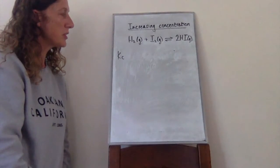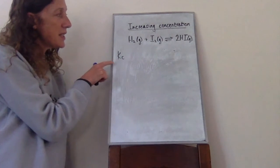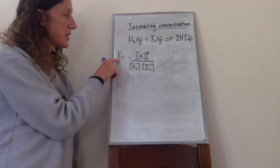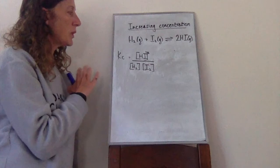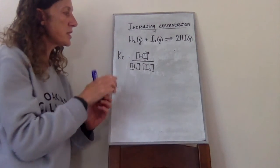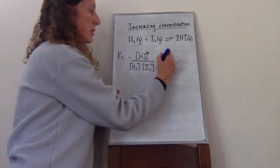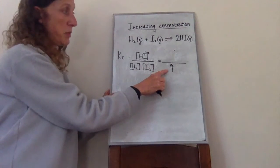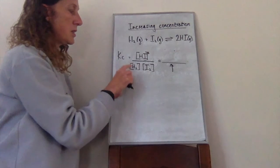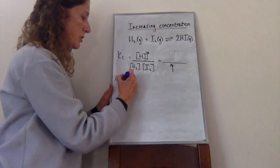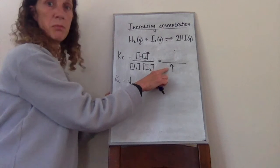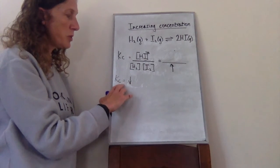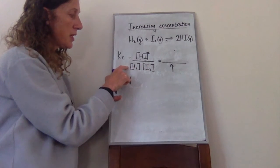Now we're going to look at concentration, using a slightly different example. Putting together the Kc expression — with square brackets this time because it's Kc — if we increase the concentration of H2, that H2 appears in the denominator. A bigger denominator means the overall value of Kc is going to go down. But Kc can't go down when concentration changes — Kc has to stay the same.